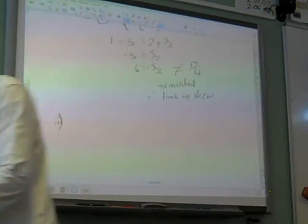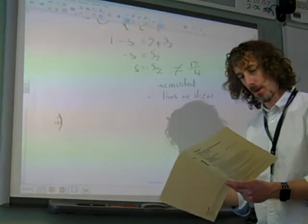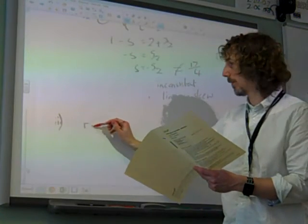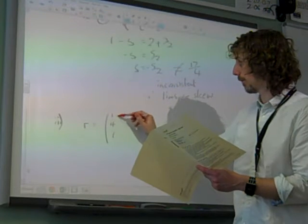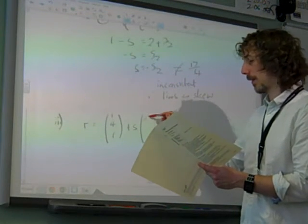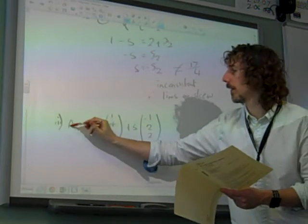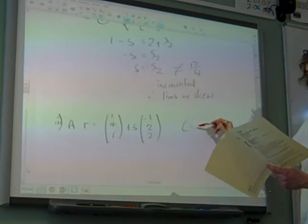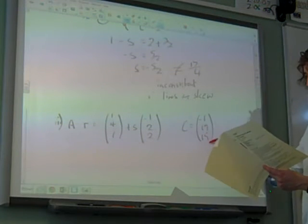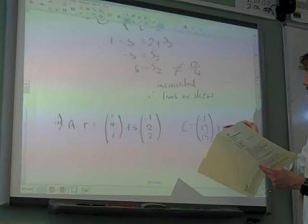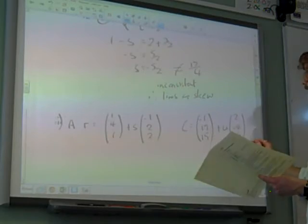Let's write down what lines A and C are. So A, part 2. A is the line R equals 1, 4, 1 plus S times minus 1, 2, 2. And C is the line minus 1, 19, 15 plus U times 2, minus 4, minus 4.